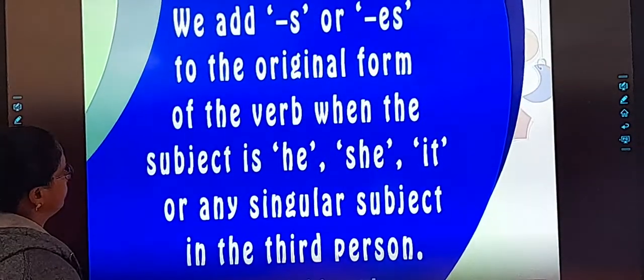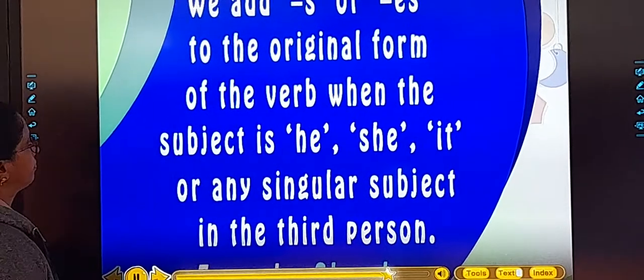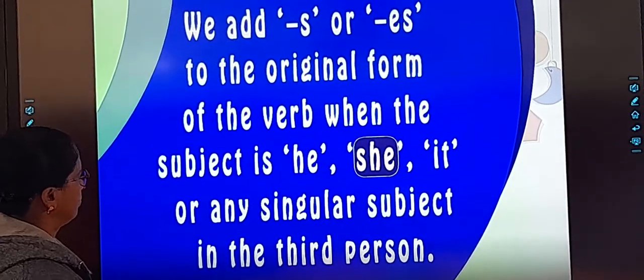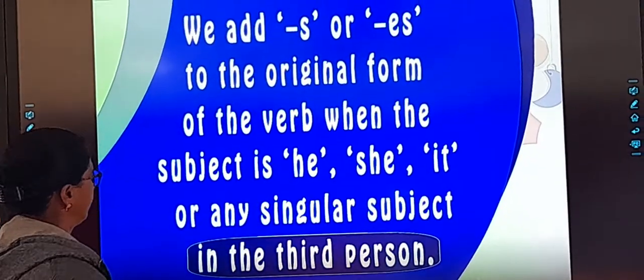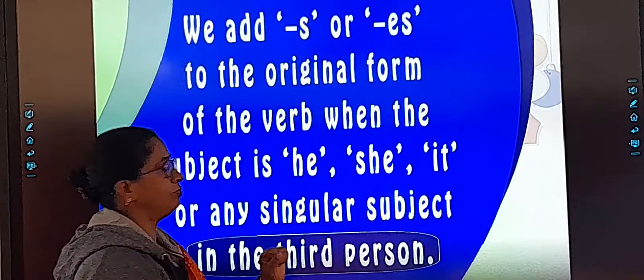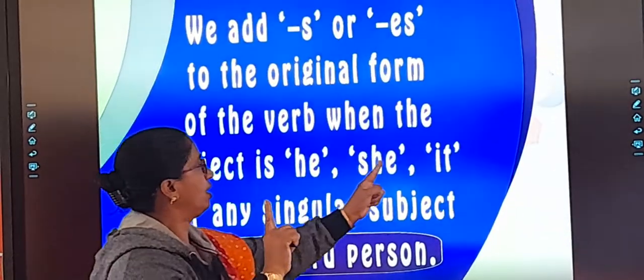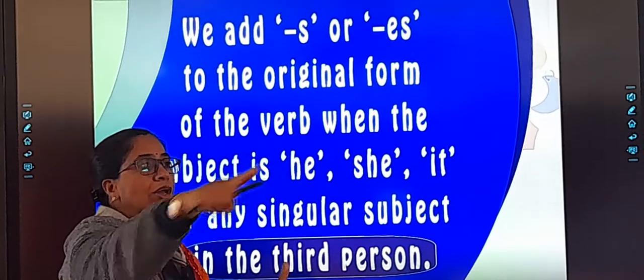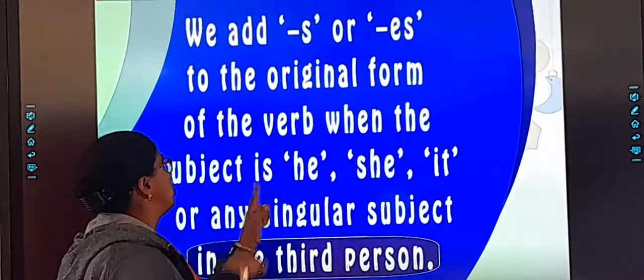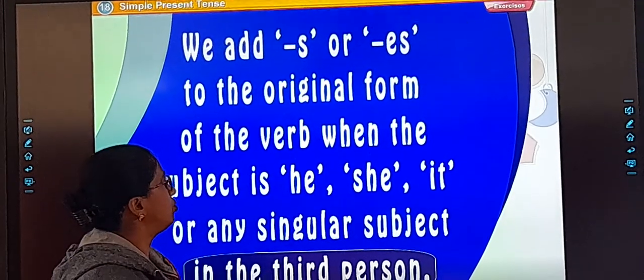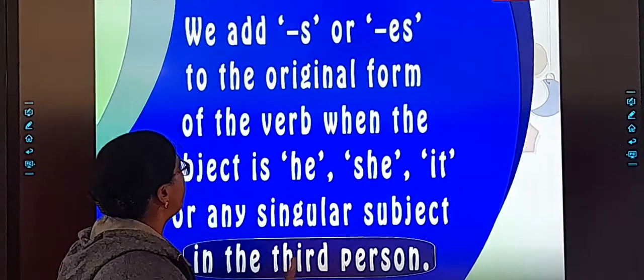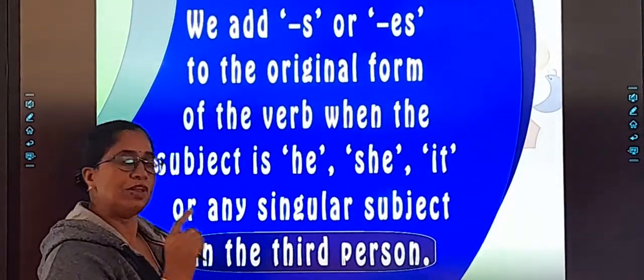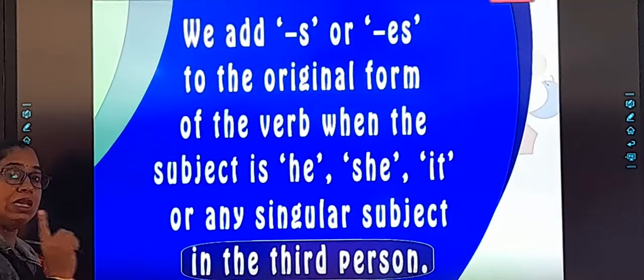We add S, or ES to the original form of the verb where the subject is he, she, it, or any singular subject. Now if it's singular, like he, she, it, and it's third person - who we are talking about - he is a boy, she is a girl, it is my favorite dog. We are not talking with, we are talking about. So that third person, he, she, it, singular subject, third person, we have to add S or ES to the verb form. Understood? So when you do the exercise, this will be more clear to you. So let's go to the worksheet.